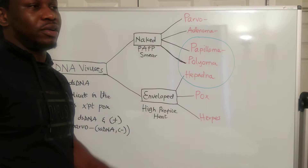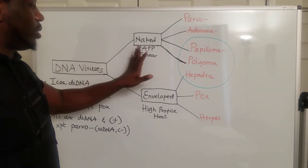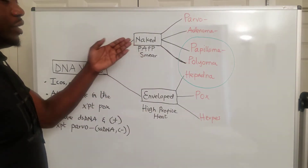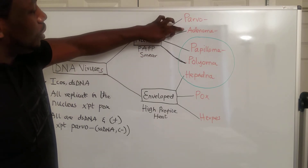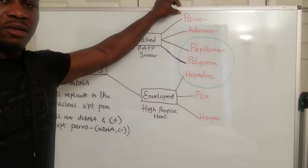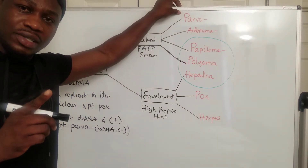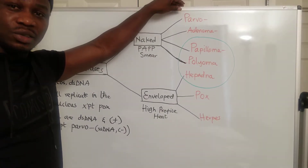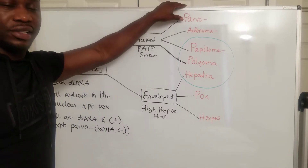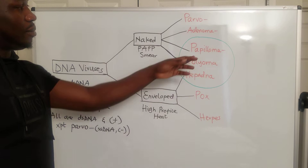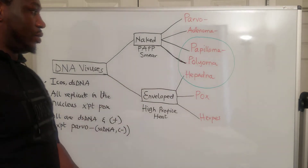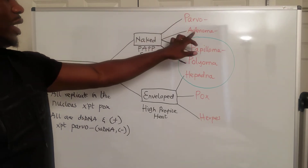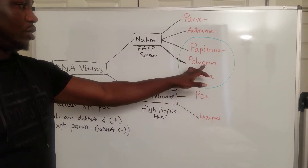For the naked DNA viruses, a perfect mnemonic to remember them is PAP smear — just the PAP part, P-A-P-P. The first P is parvo virus — remember, it is single stranded DNA and negative, unlike the others. A is adenovirus, the second P is papilloma virus, and the last P is polyoma virus. So the naked DNA viruses are: parvo, adeno, papilloma, and polyoma virus.